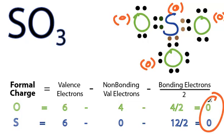So we have formal charges of zero for each of the atoms in SO3. That makes this the best Lewis structure for SO3. This is Dr. B, and thanks for watching.